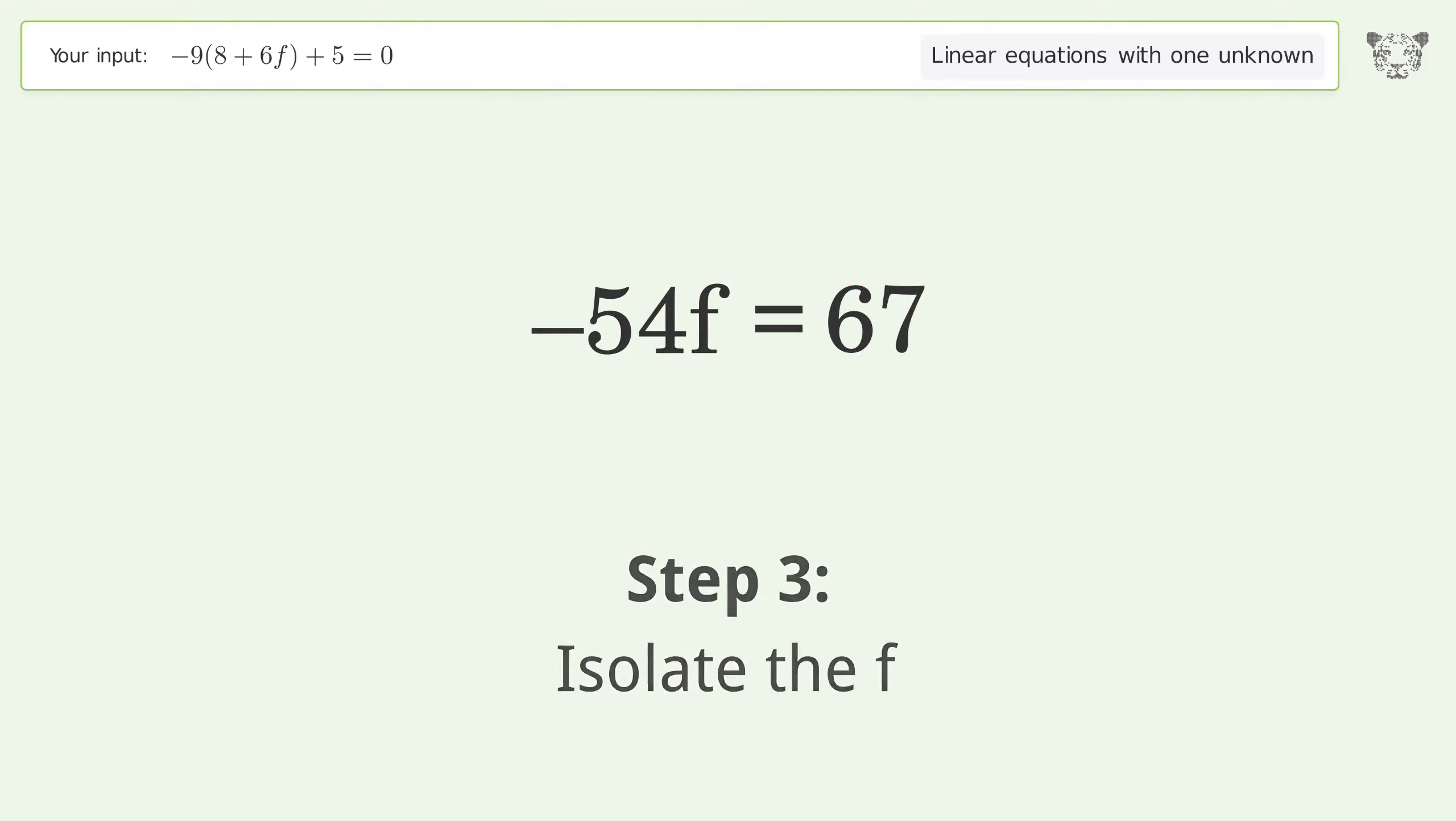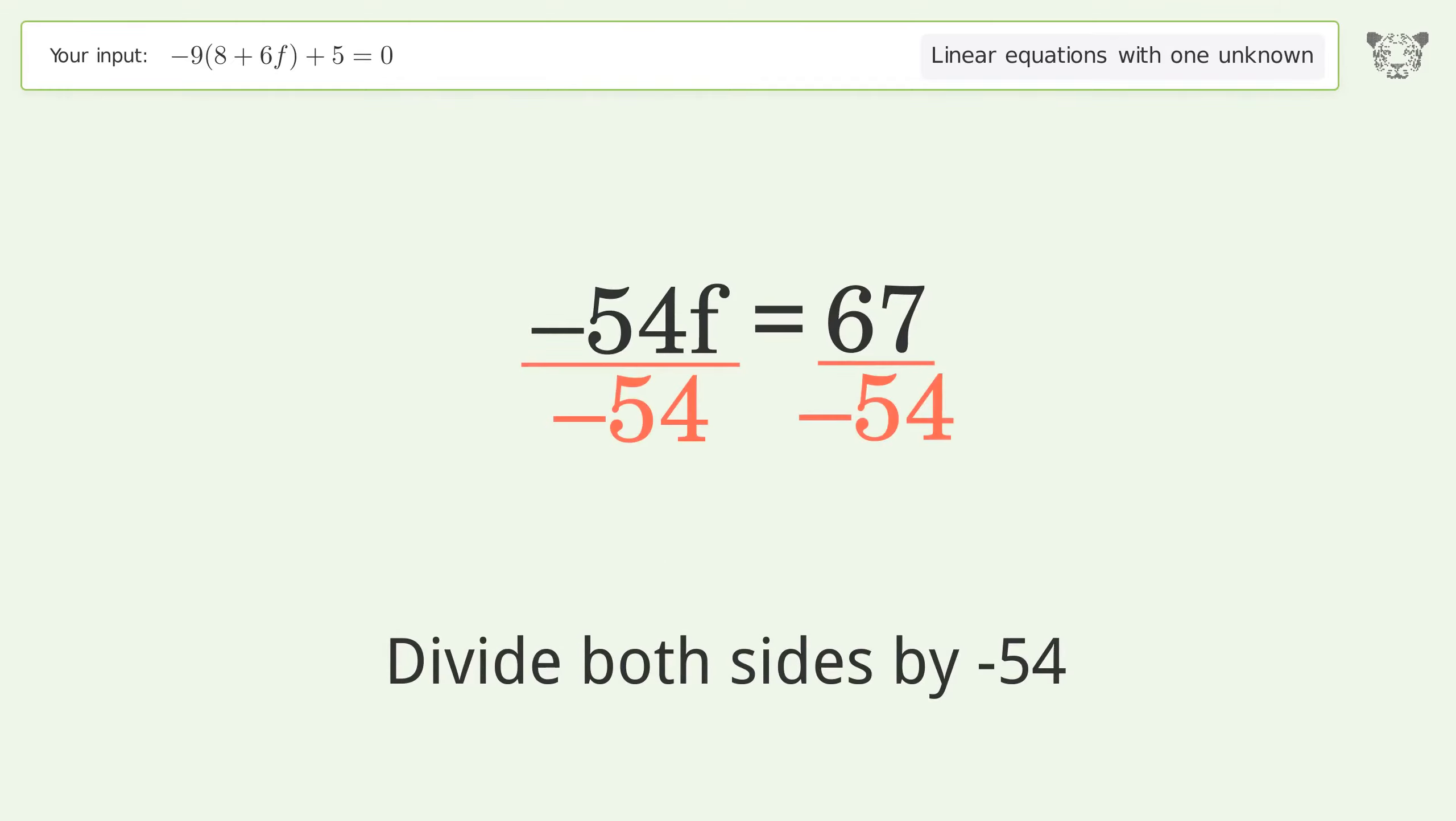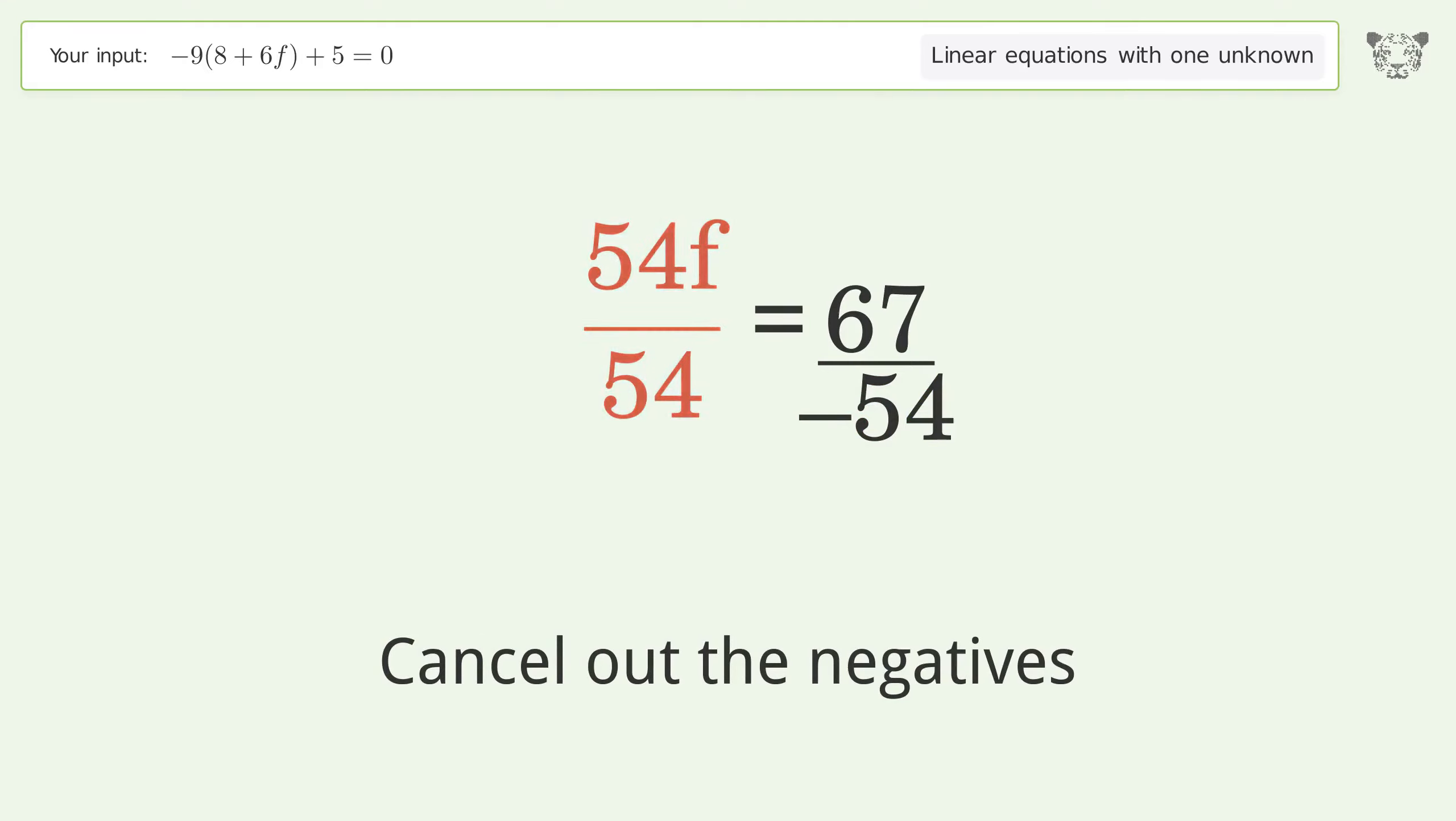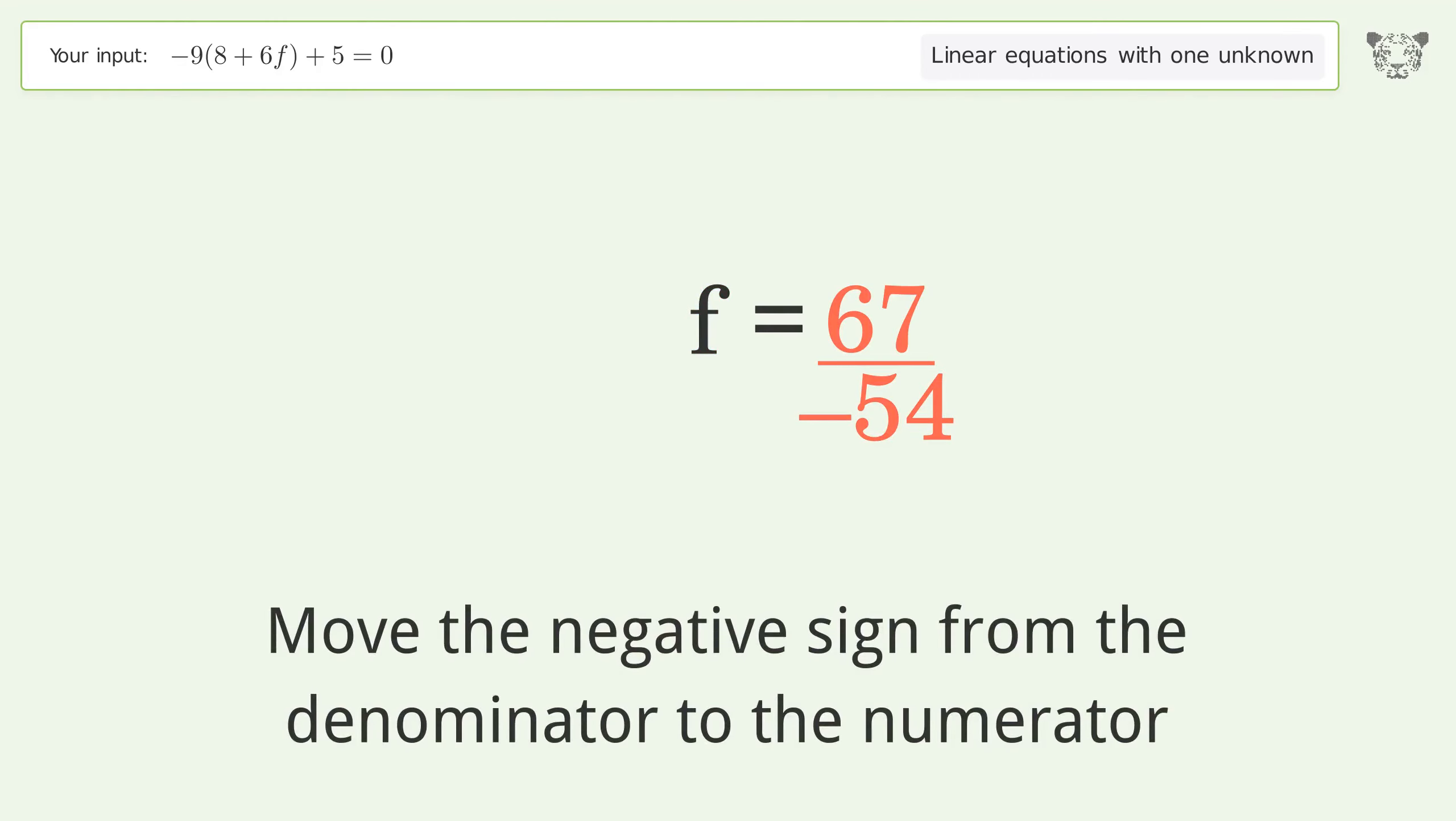Isolate the f. Divide both sides by negative 54. Cancel out the negatives. Simplify the fraction. Move the negative sign from the denominator to the numerator.